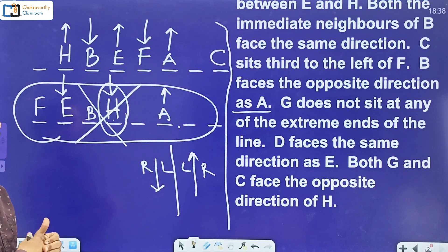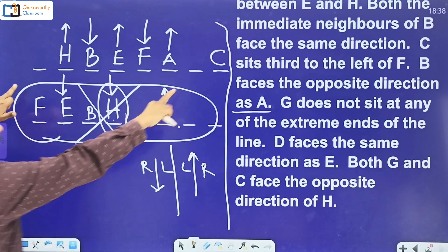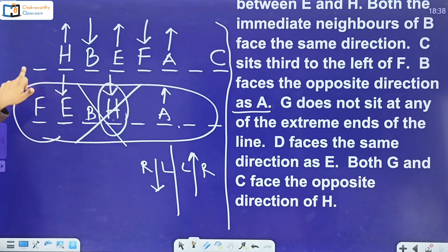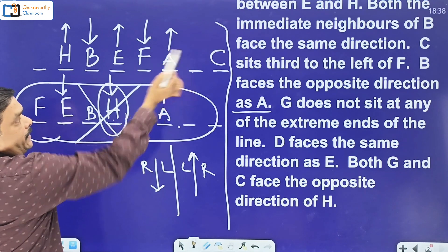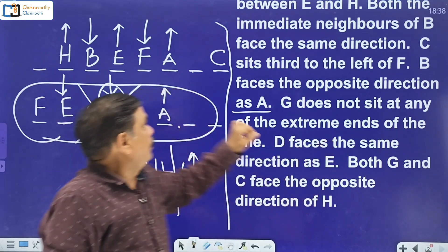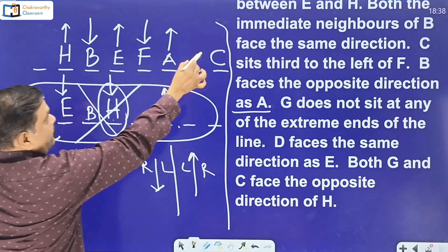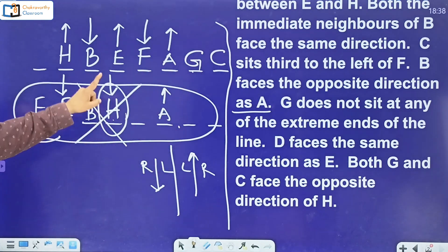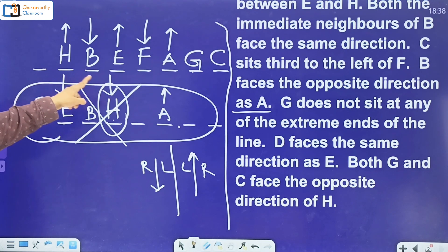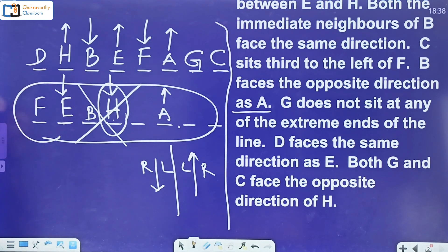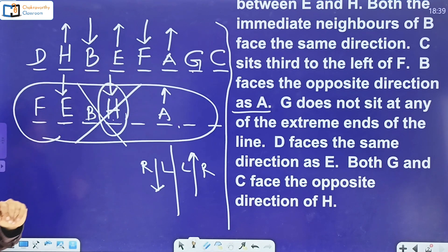Next clue: G does not sit at any of the extreme ends of the line. The two extreme ends are positions one and eight — position one is already occupied by C, and G cannot be at position eight either. That leaves only one valid place for G. When G is placed there, we have A, B, C, E, F, G, H all positioned. The only remaining person is D, who goes into the last vacant spot.